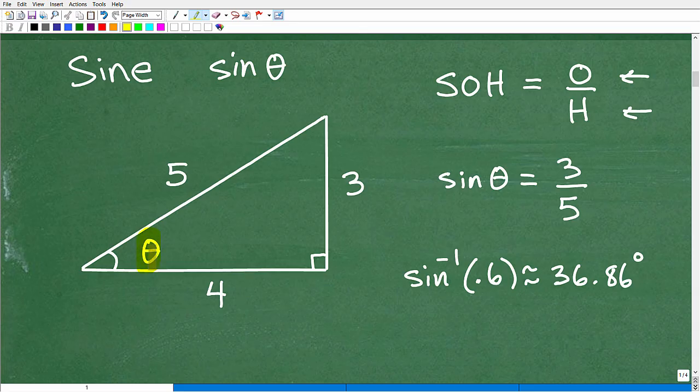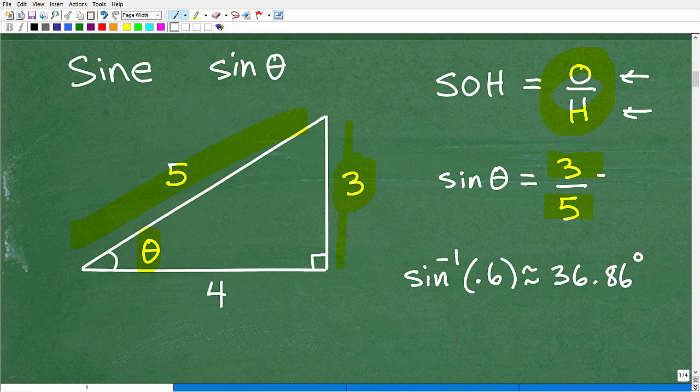I just need to look at the given information I have in my little triangle. Here's my angle. This is my opposite side, and this is my hypotenuse side. So I'm going to create this fraction, 3 over 5. Now we have this set up so we can solve this. We take 3 divided by 5, and we get this nice decimal point 0.6.